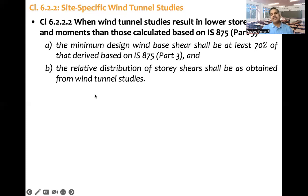In wind tunnel tests, we get the distribution of storey shears. The code suggests the relative distribution of storey shears shall be as obtained from the wind tunnel studies. Force cannot be reduced less than 0.7 times what is calculated based on 875, but the distribution should be same as obtained from the wind tunnel test.